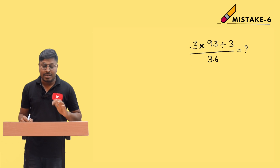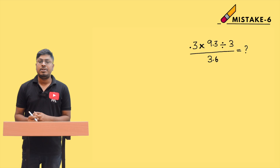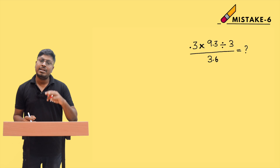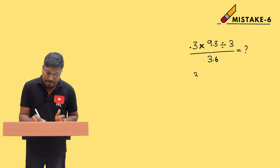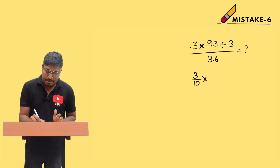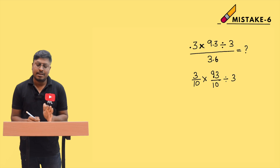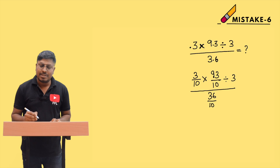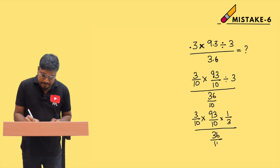Here is another example: 0.3 × (9.3 ÷ 3) ÷ 3.6 = ? We have a numerator part and a denominator part. First, remove all decimal points. 0.3 = 3/10, and 9.3 = 93/10, and 3.6 = 36/10. So the expression becomes: (3/10) × (93/10 ÷ 3) ÷ (36/10). Division by 3 becomes multiplication by 1/3.